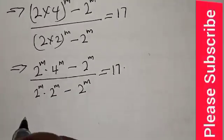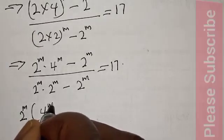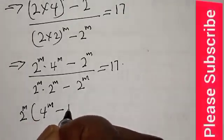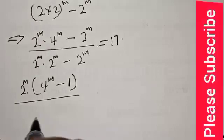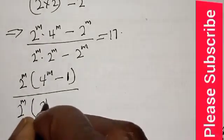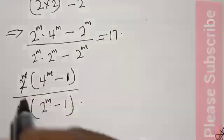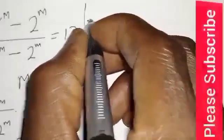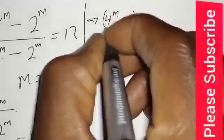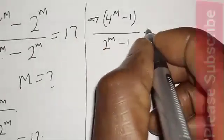Here, 2 raised to the power m is common. We have 2 raised to the power m into 4 raised to the power m minus 1, over 2 raised to the power m into 2 raised to the power m minus 1. Now this will cancel. This implies that we have 4 raised to the power m minus 1, over 2 raised to the power m minus 1, equal to 17.